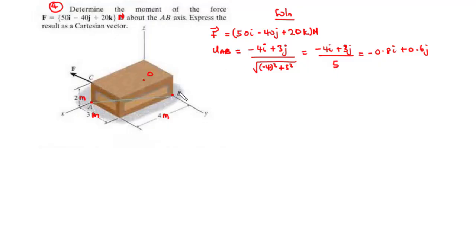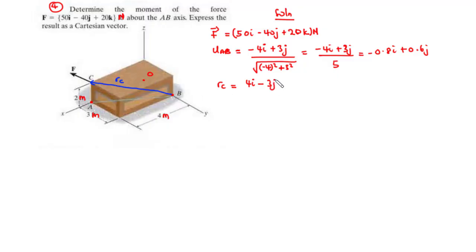Next, we define the position vector from B to any point on the line of action of force F — let's call that r_c. From point B, moving away from O along the x-axis gives a positive value: 4i. Then moving towards O along the y-axis gives a negative value: negative 3j. Moving away from O by 2 meters along the z-axis gives positive 2k. So r_c equals 4i minus 3j plus 2k meters.